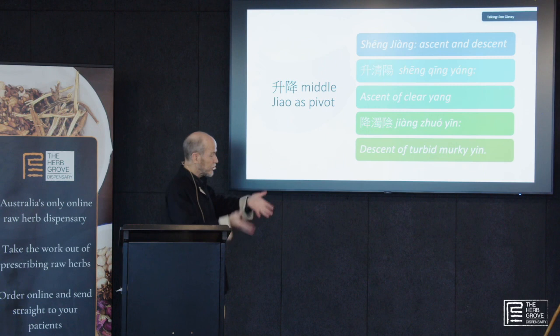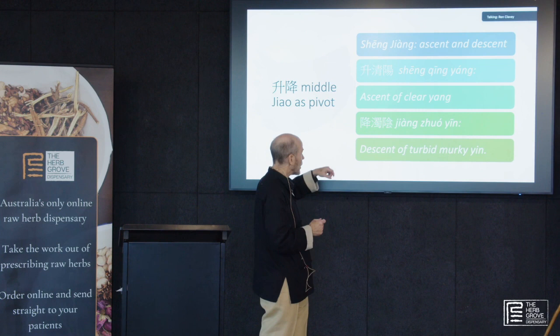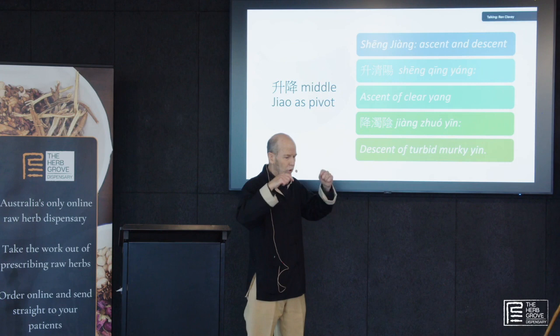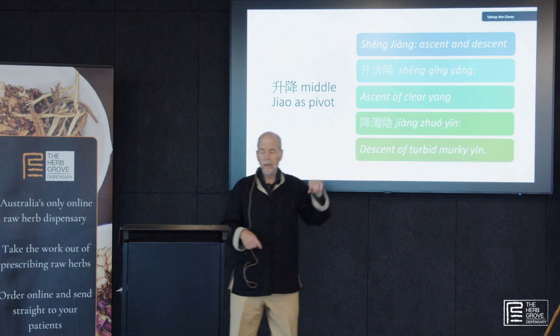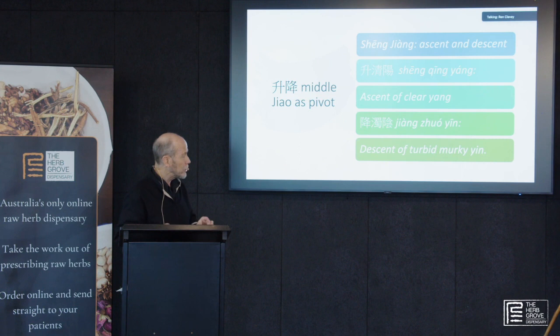Shang Jiang is ascent and descent. You want to Shang Qing Yang — to ascend clear Yang. But you also want Jiang, which is often described as direct downwards or drive downwards. You want to descend Zhuo Yin, the murky Yin.